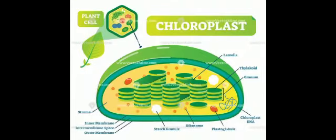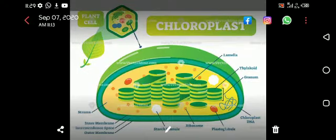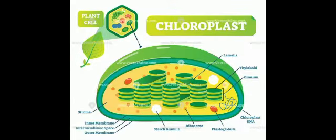Ribosomes are also floating in the chloroplast, as you can see. The liquid inside the chloroplast is called stroma. These stacks are connected with a connection called lamella. The chloroplast also has starch granules which store starch, and it also has its own DNA, called chloroplast DNA.